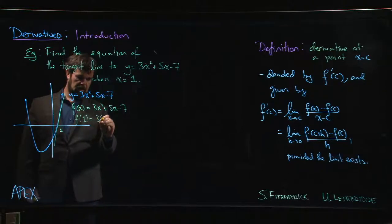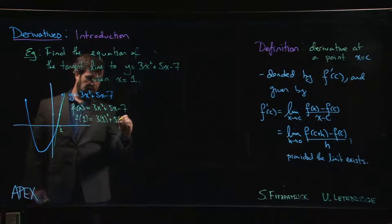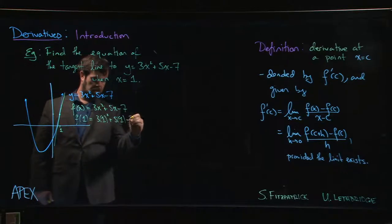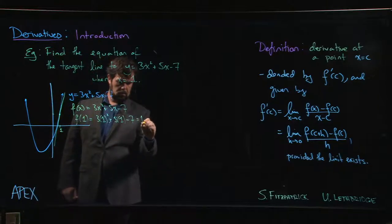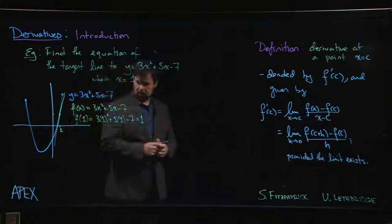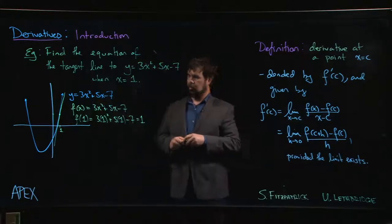So we get 3 times 1 squared plus 5 times 1 minus 7, which gives us 1. 3 plus 5 is 8, minus 7 leaves us with 1.